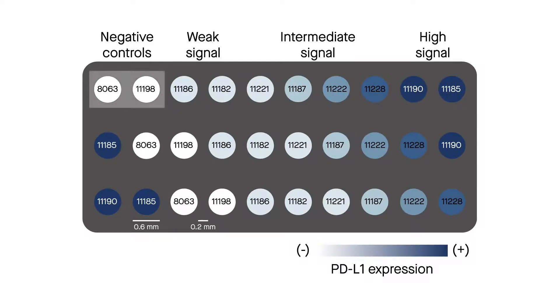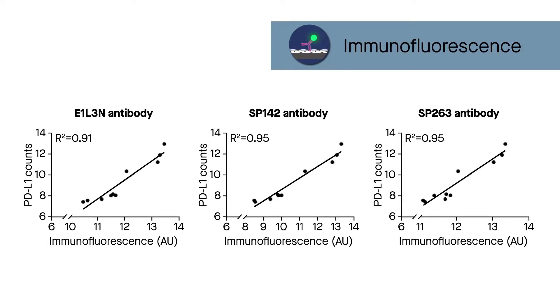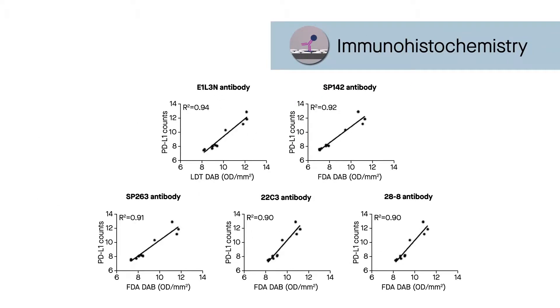The cell lines expressed negative, weak, intermediate, or high levels of PD-L1. The team observed high correlations between the results obtained by DSP and those obtained by immunofluorescence as well as between the DSP and immunochemistry results.